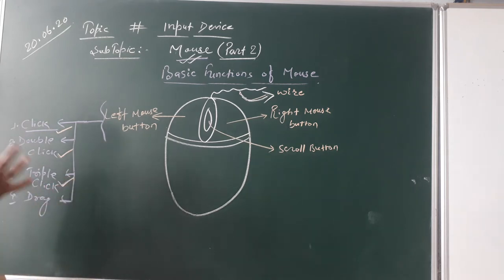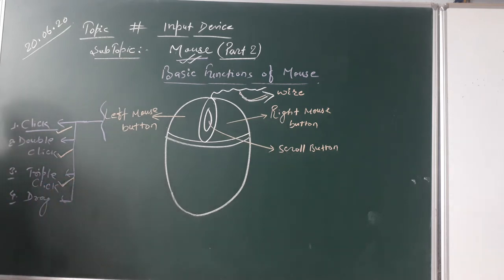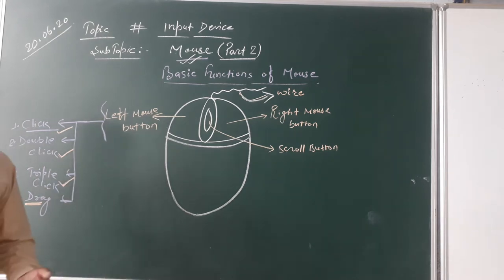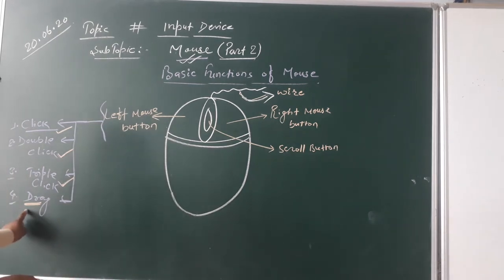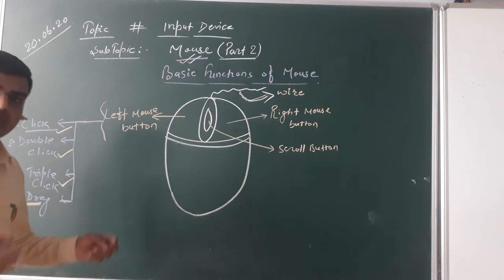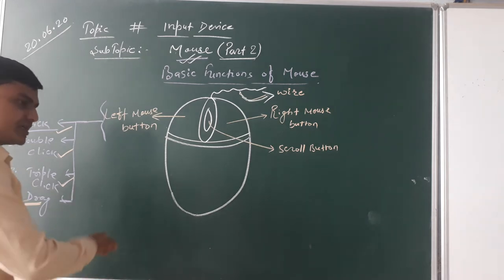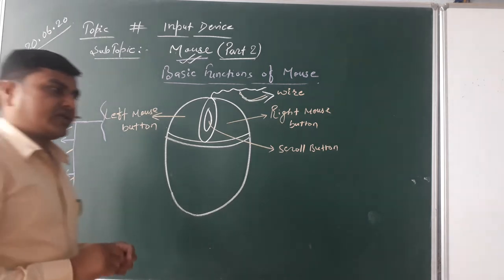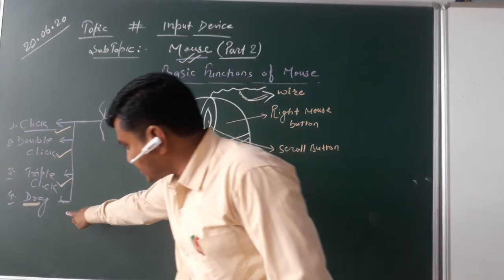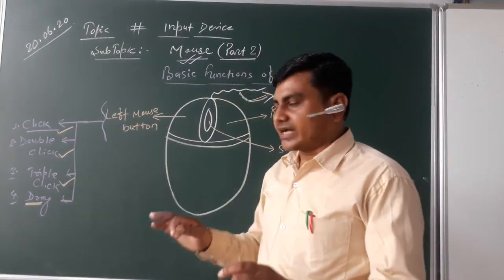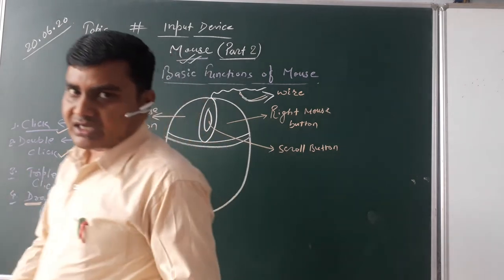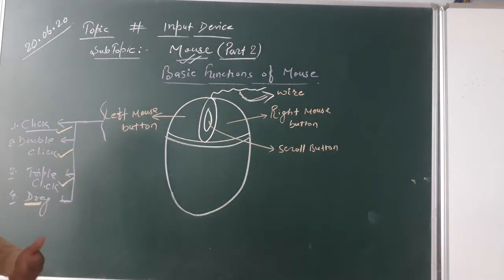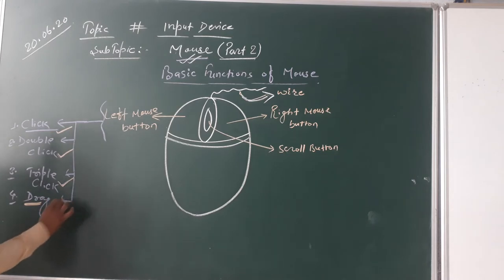Double click is two times clicking of the left mouse button, and triple click is three times quickly clicking the left mouse button. Drag is another kind of left mouse button function that is used to move a file, folder, or object from one place to another. In drawing programs, the drag function is used to draw shapes like circles, squares, triangles, and any other shape.